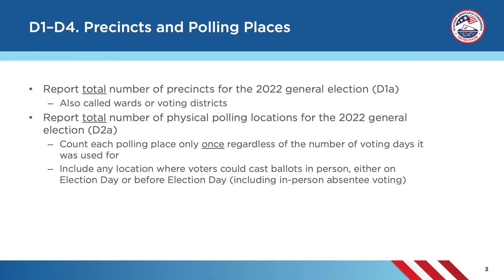The first set of questions in this section of the survey is about precincts and polling places. EAVS defines a precinct as the geographic area to which voters are assigned according to their residential address. Some jurisdictions use the term ward or voting district instead of precinct. In D1A, record the number of precincts your jurisdiction had for the 2022 general election.